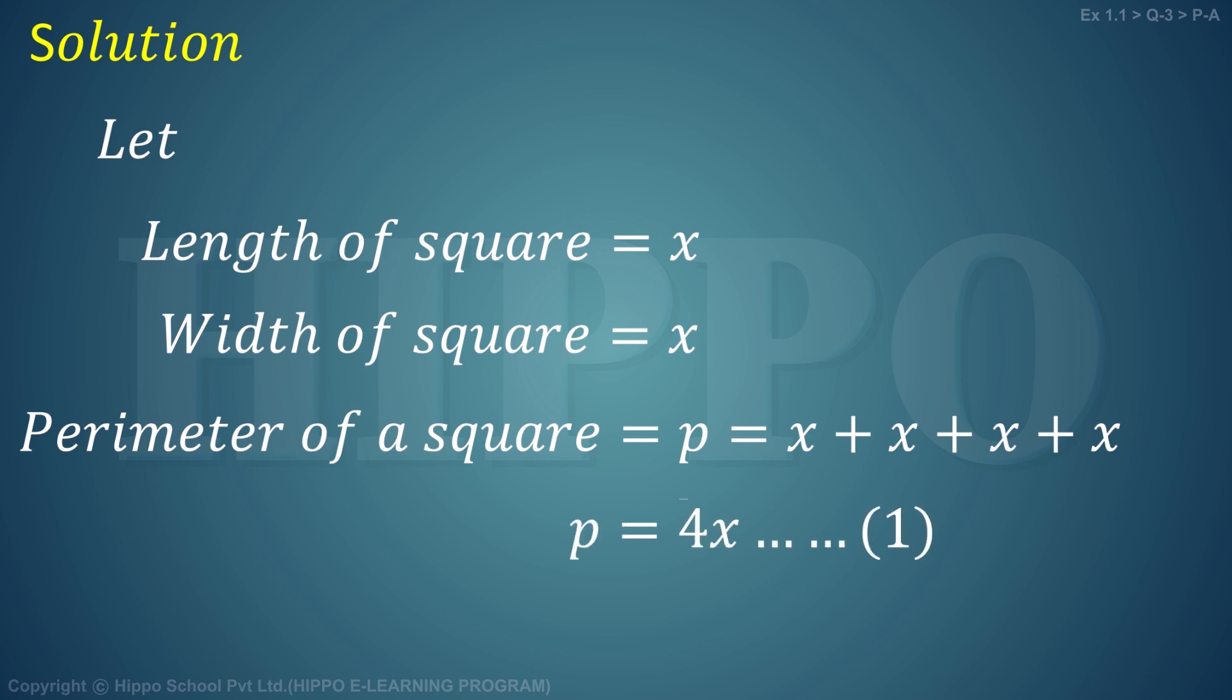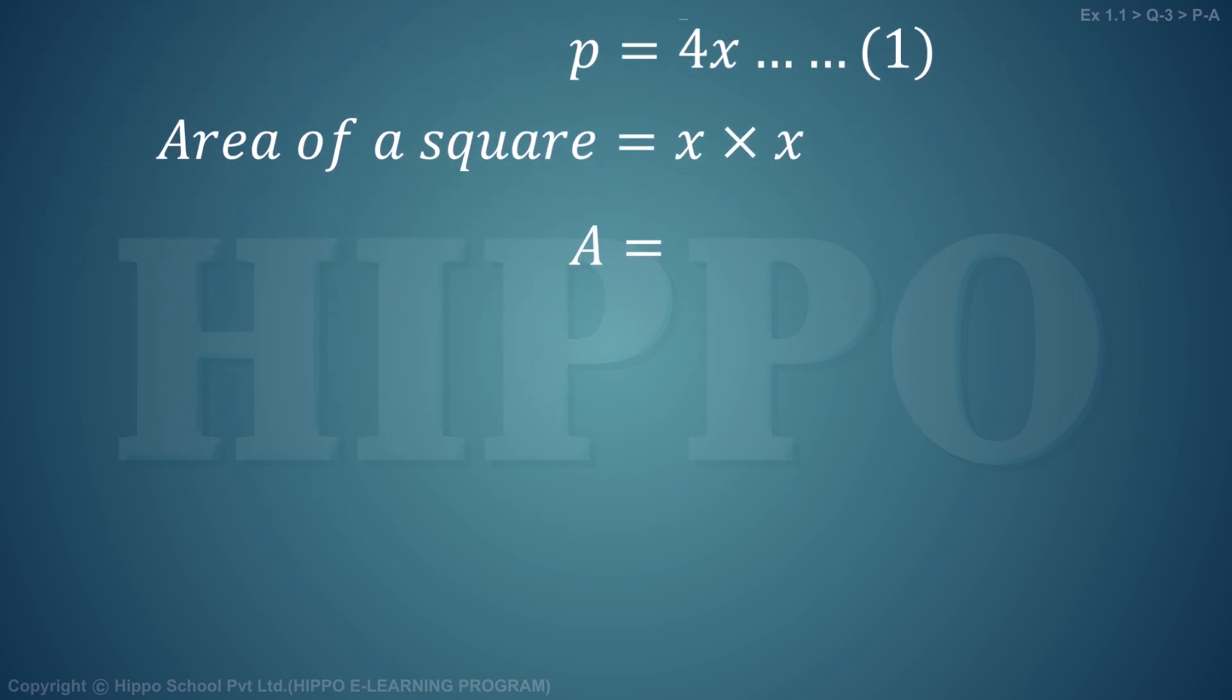Now, area of a square equals length into width, which is x into x, so A = x². In the next step, we are taking square root on both sides, so x = √A.